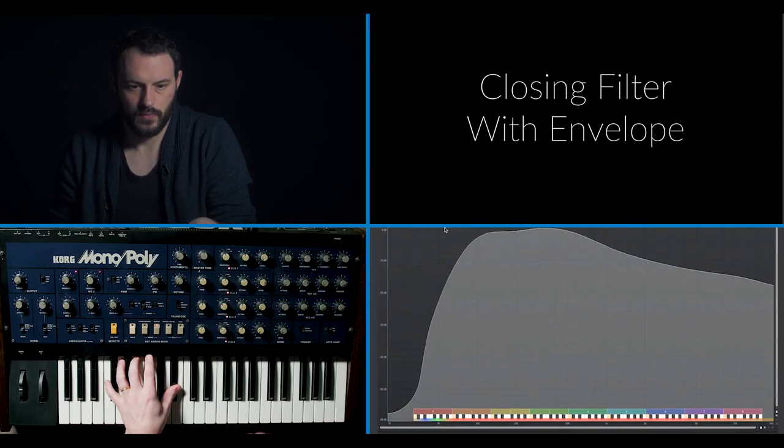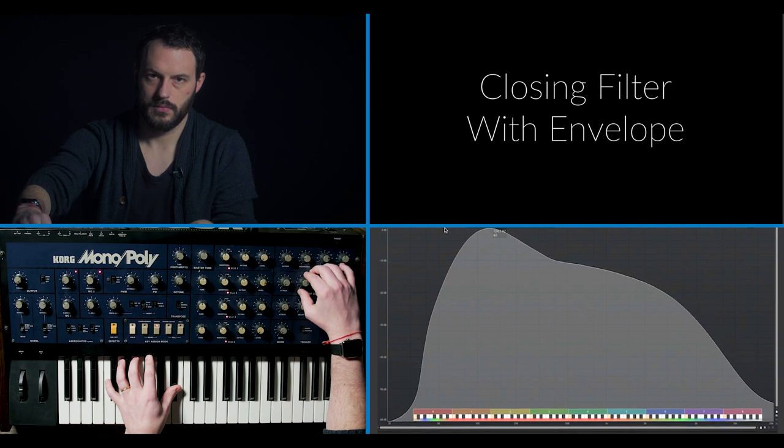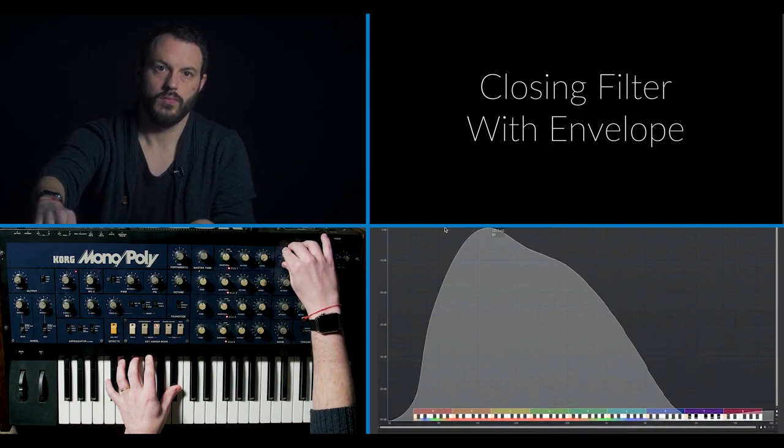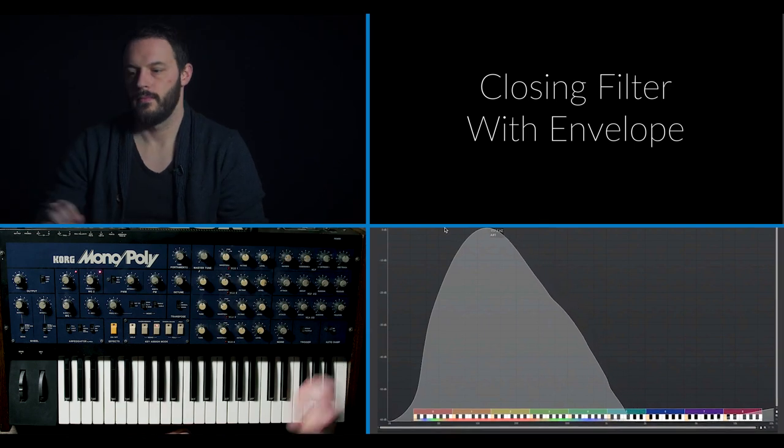The first thing you need to know about envelopes is that they are a control signal over time. From a previous episode we talked about imagining using your hand to sweep a knob — if you think about how fast you might turn it up or how slow you might turn it down, that in a nutshell is what an envelope is. What we just heard was a basic sound getting duller over time because we closed the filter with an envelope.